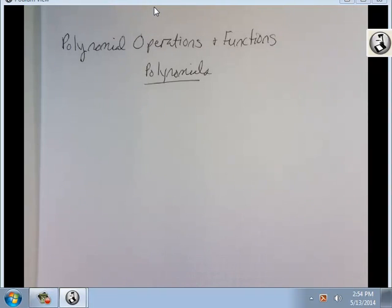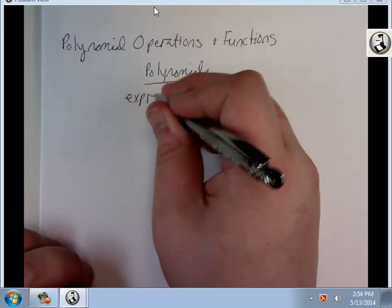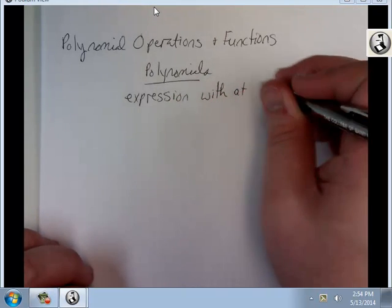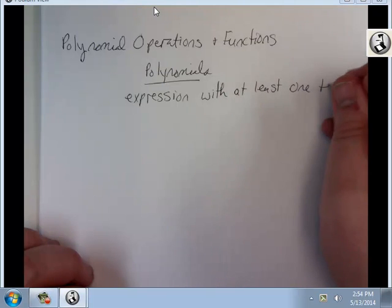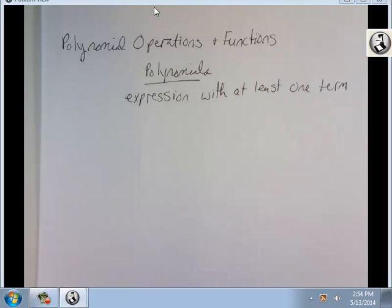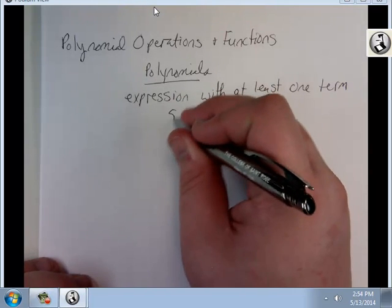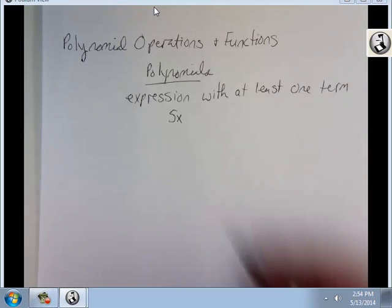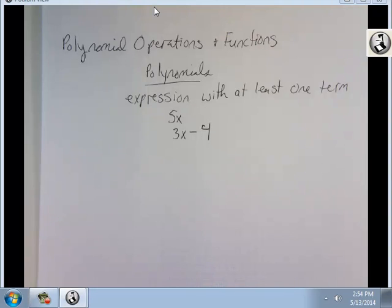A polynomial is an expression with at least one term. 5x is one term, and technically that's a polynomial. 3x minus 4 is also a polynomial, two terms, 3x and minus 4.